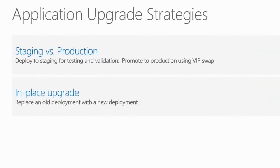A more difficult option is the in-place upgrade, which upgrades code and model on the roles in an upgrade-domain fashion — upgrading domain one first, then two, keeping everything online as best as possible. Some users may temporarily get new code while others get old. It's faster and gives quick feedback, but it's riskier because to roll back you have to pull out the old package and do another in-place upgrade of the old code, whereas the staging-production approach makes it easy to switch back and forth.